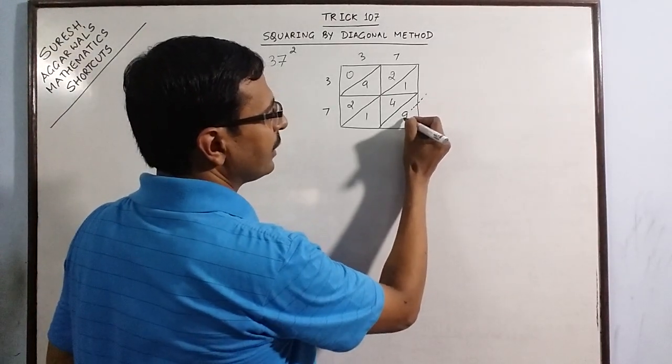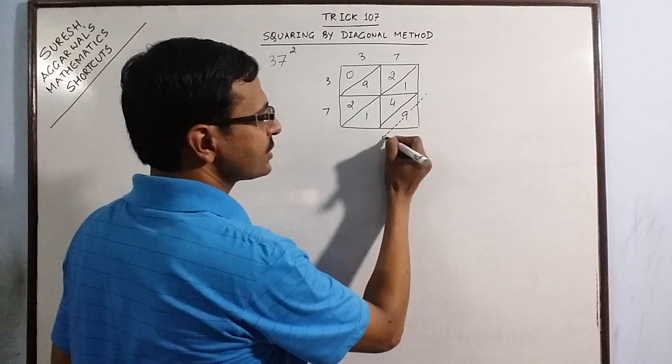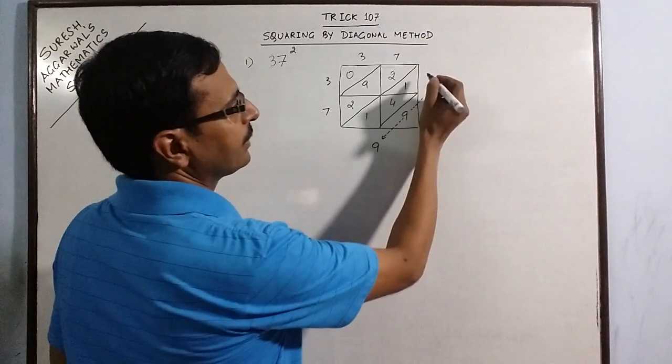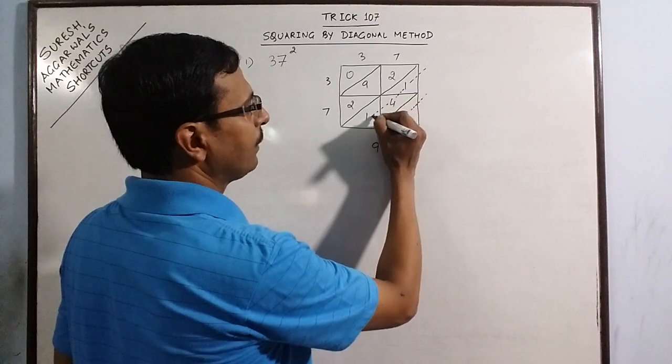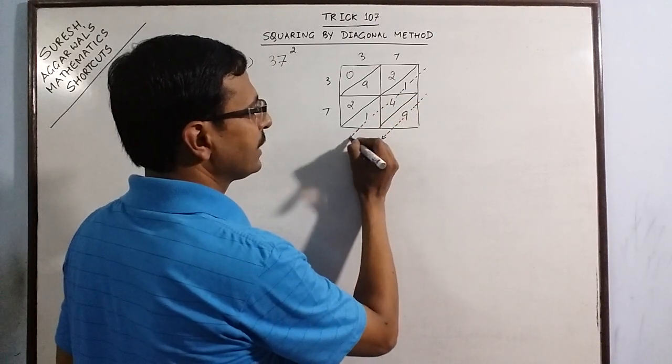Now the first number is 9. So just write 9 here. The second one is 1 plus 4 plus 1. This will give you 6.